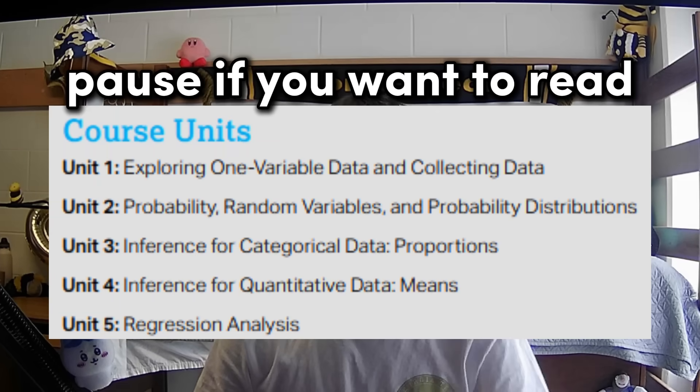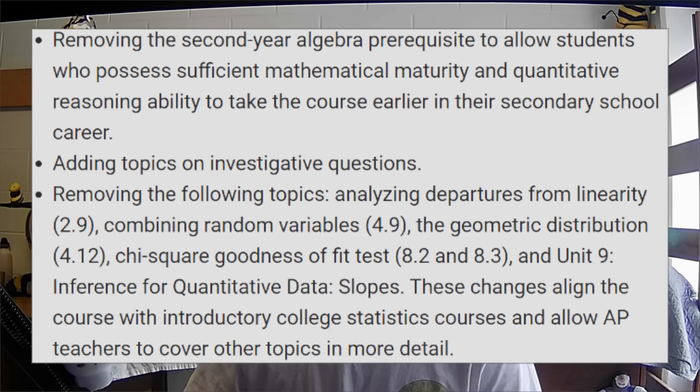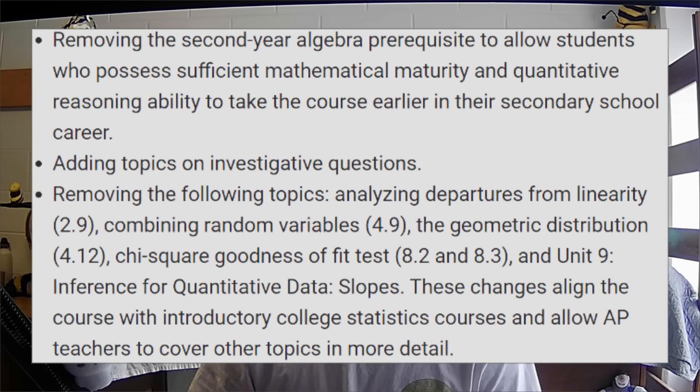Starting off with AP stats, College Board will be cutting its units almost in half. Instead of the 9 units that AP stats had before, it'll now only have 5 units, which are shown on the screen in front of you. The reason for these changes, as College Board states, are removing the second year algebra prerequisites so that students can take the course earlier in their high school and they don't need to know as much algebra for the course.